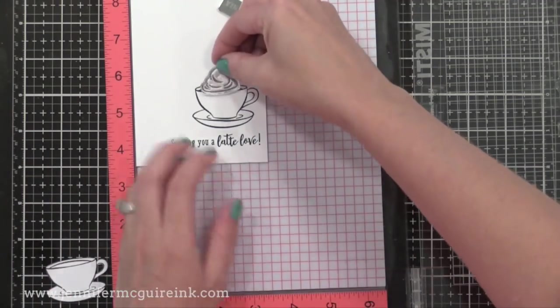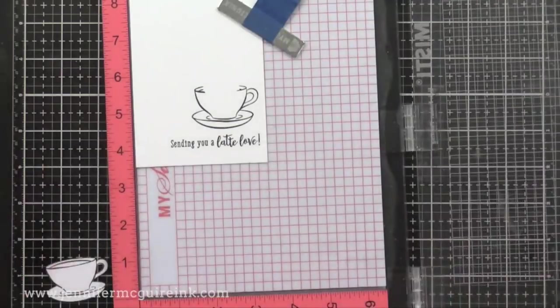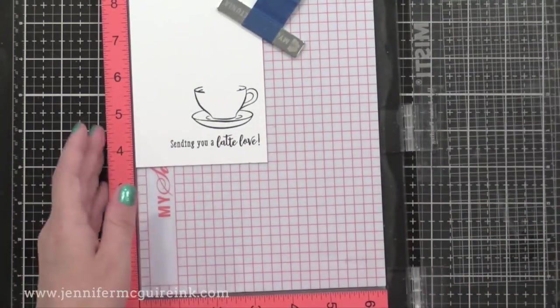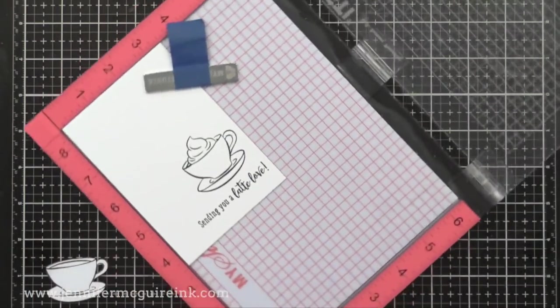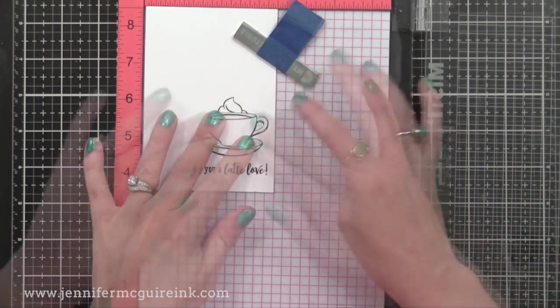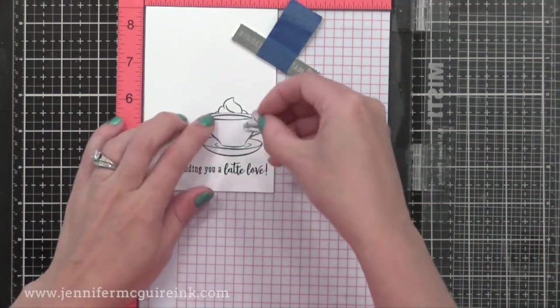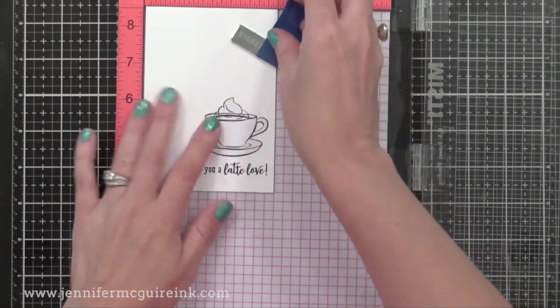So I stamped that with Hero Arts Black Intense ink, which is a Copic friendly ink. I can now remove the little mask for the whipped cream, and add the whipped cream stamp in place, and stamp that with the same ink. So you can see how I have a custom look to this cup, but it really has a nice finished look to it, thanks to the masking.